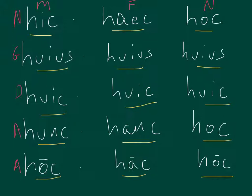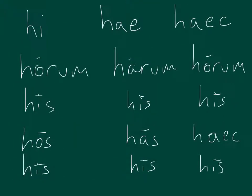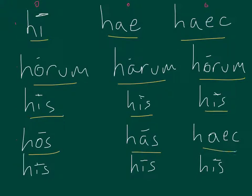Now, let's take a look at the plurals. So, once again, we have the same columns, masculine, feminine, neuter, same rows, nom, gen, dat, accusative, ablative. Repeat after me. Hi, hae, haec. Horum, harum, horum. His, his, his. Hos, has, haec. His, his, his.